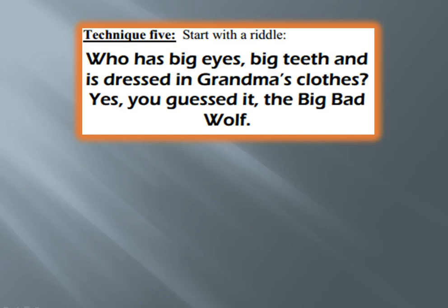Technique five: start with a riddle. I'll caution you with this one — remember how your lead helps establish your tone, and your tone determines your reader's mood. This is probably not a technique you want to use if you're writing about extremely serious subject matter. Unless you intend your piece to have a little humor or be lighthearted, I would not attempt this. So: 'Who has big eyes, big teeth, and is dressed in grandma's clothes? Yes, you guessed it — the big bad wolf.' The riddle relates to a character who's going to be important in the story's action. Riddles require substantial creativity, but if you come up with a clever one, readers really respond well to it.